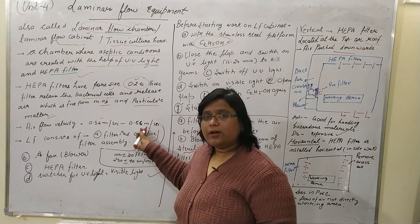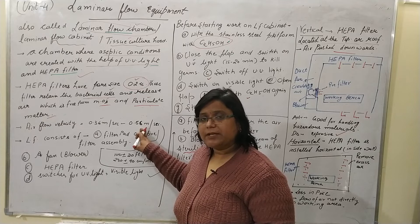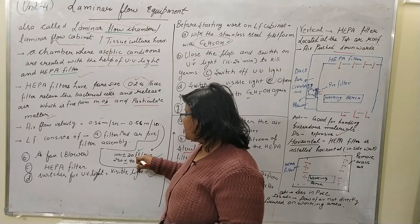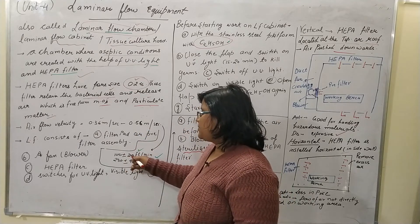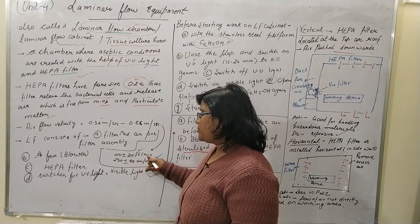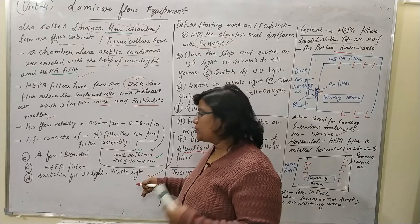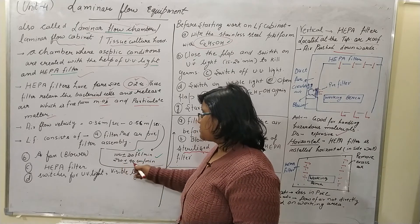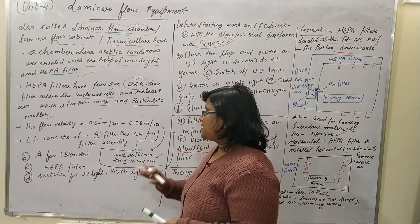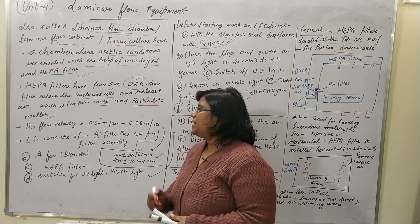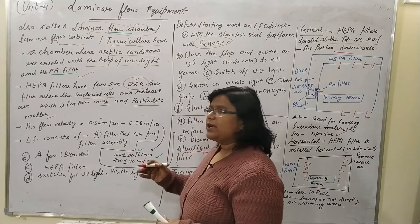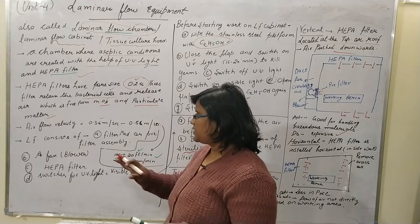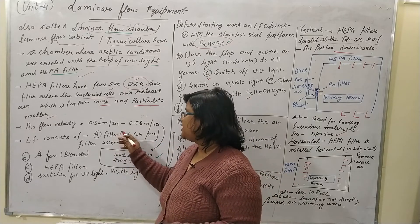The airflow velocity is 0.36 to 0.56 meters per second, or 100 ± 20 feet per minute, or 230 ± 90 centimeters per minute. The laminar airflow cabinet has some basic installations: a filter pad or pre-filter assembly, a fan or blower, the HEPA filter, and switches for UV light, visible light, and the blower.